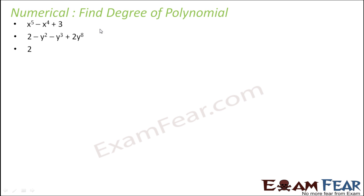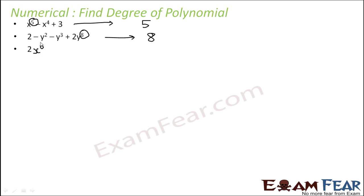Let's try to find the degree of these polynomials. In the first case the highest power is x to the power 5, and this is a polynomial, so the degree is 5. In this case, this is also a polynomial because all powers are whole numbers — the highest power is 8, so the degree is 8. The constant 2 can be written as 2 times x to the power 0, so the degree is 0.